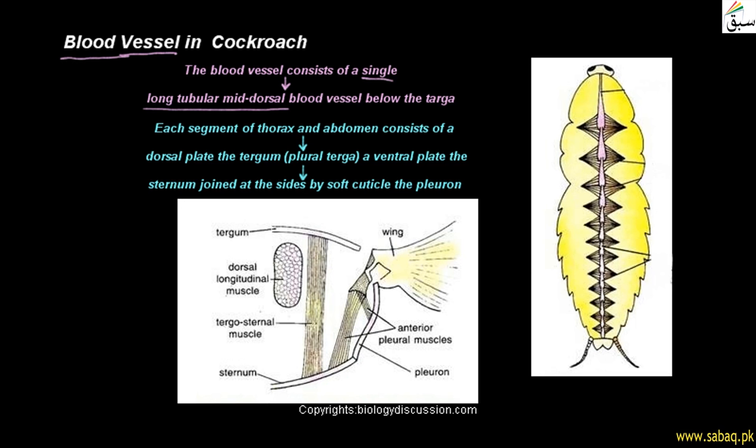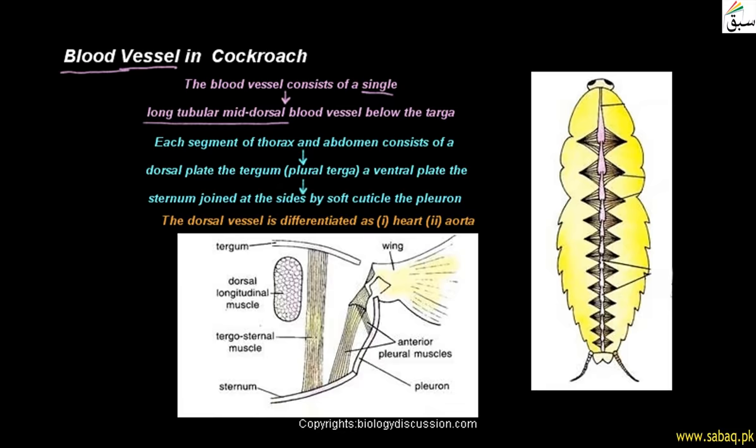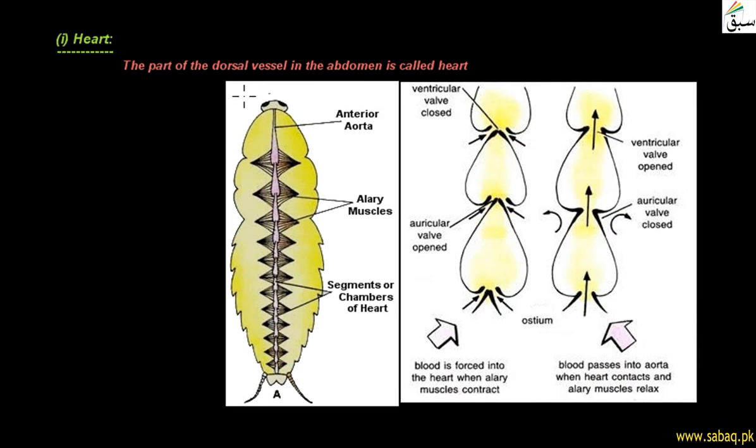If we talk about the blood vessel, the dorsal vessel is differentiated into two parts: the heart and the aorta. The part of the dorsal vessel located in the abdomen is the heart, while the region extending into the thorax and head is the aorta.